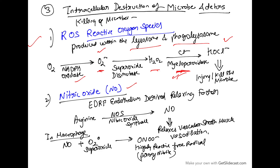Nitric oxide is another mechanism, also known as EDRF — endothelium-derived relaxing factor — which relaxes vascular smooth muscle. Arginine in the presence of nitric oxide synthase produces NO, causing vasodilation. In the macrophage, NO reacts with the superoxide radical O2⁻ to form ONOO⁻, peroxynitrite, which is a highly reactive free radical that kills the microbe.